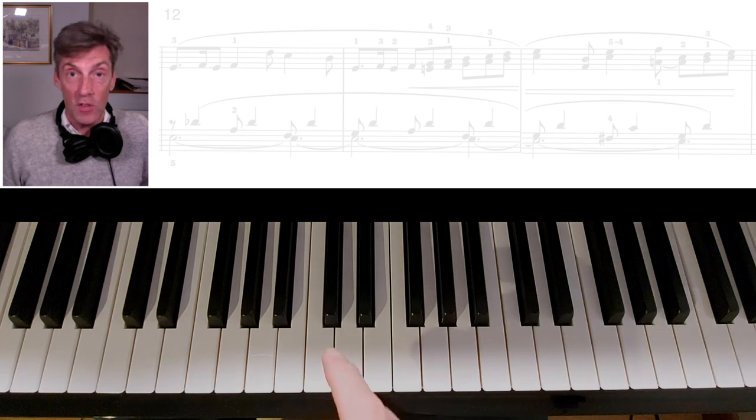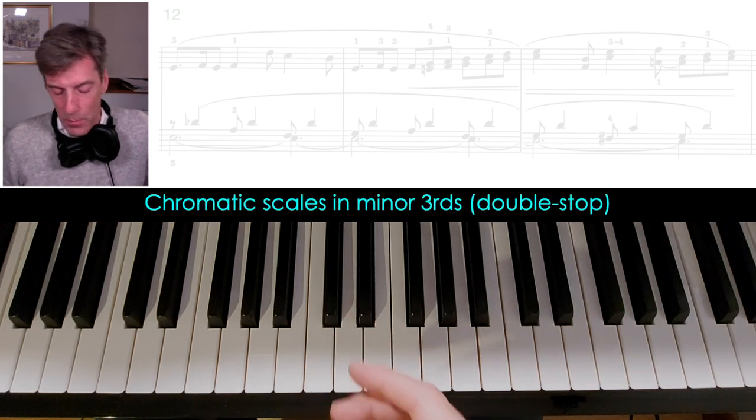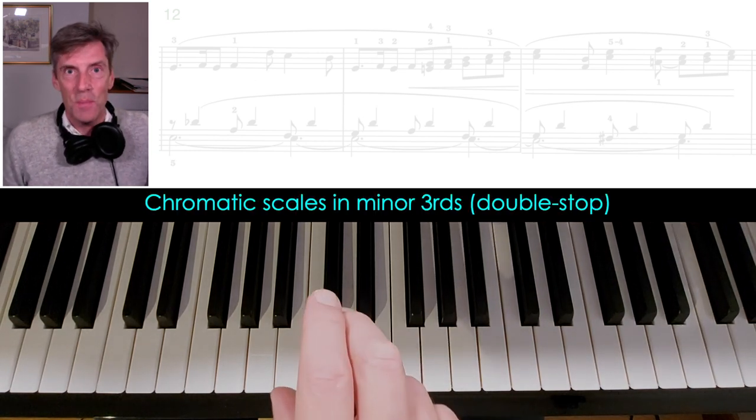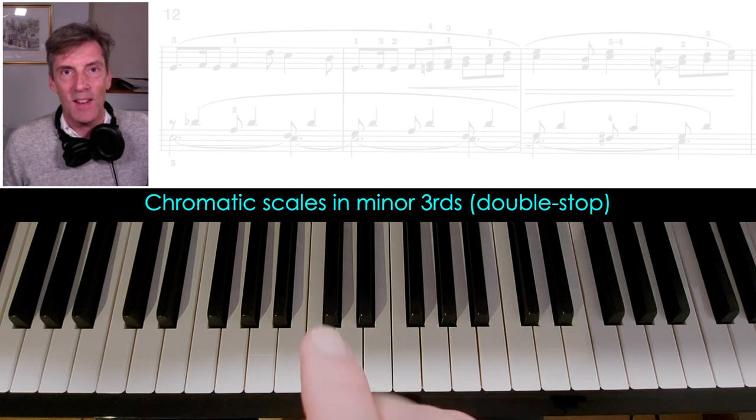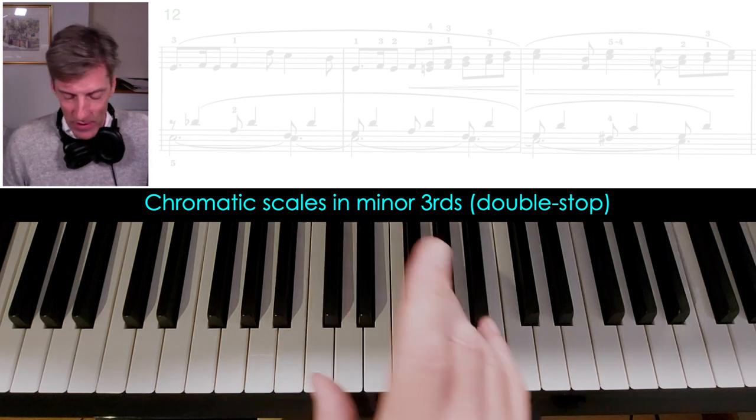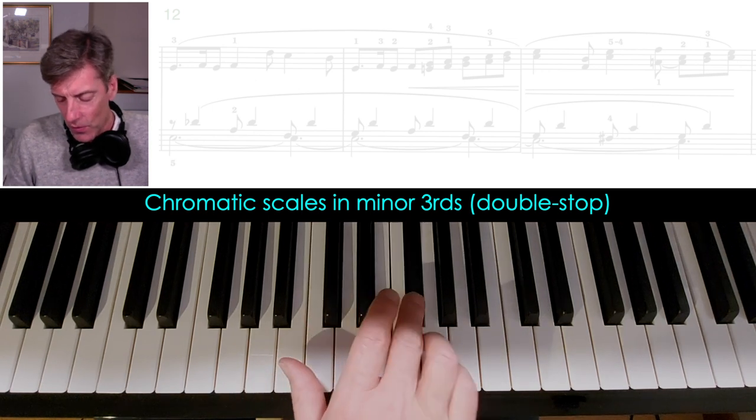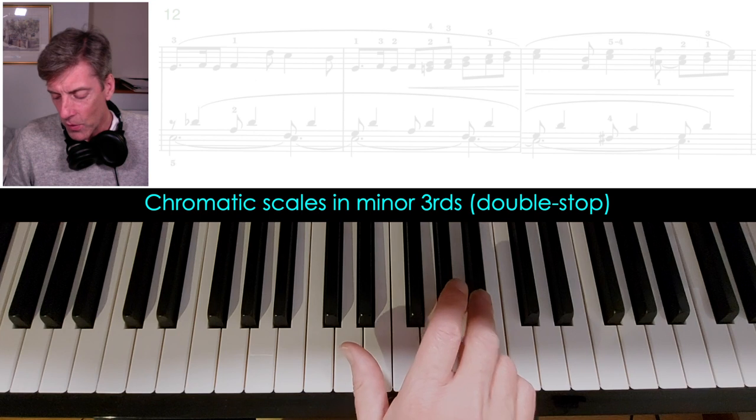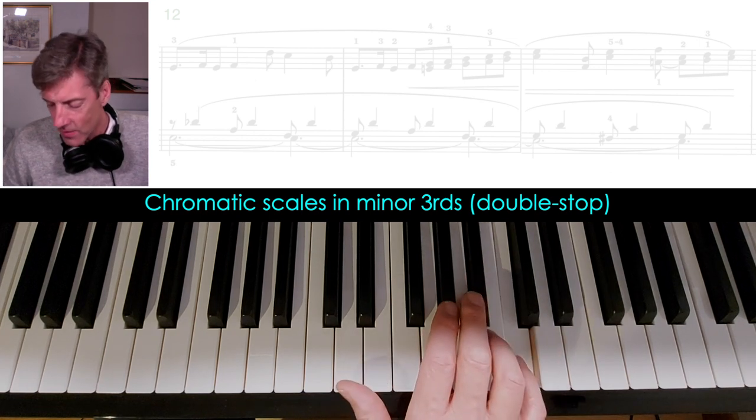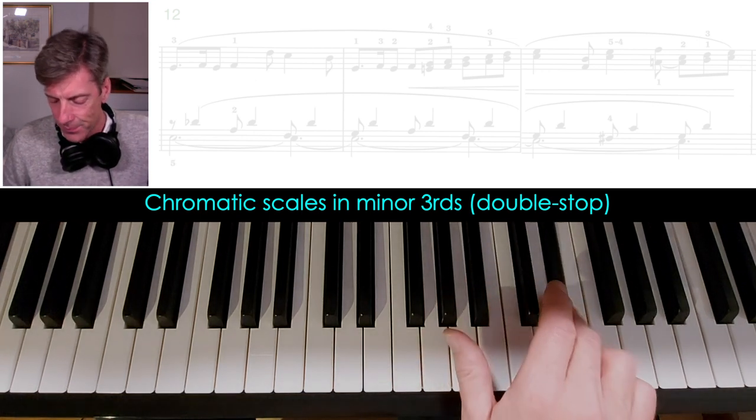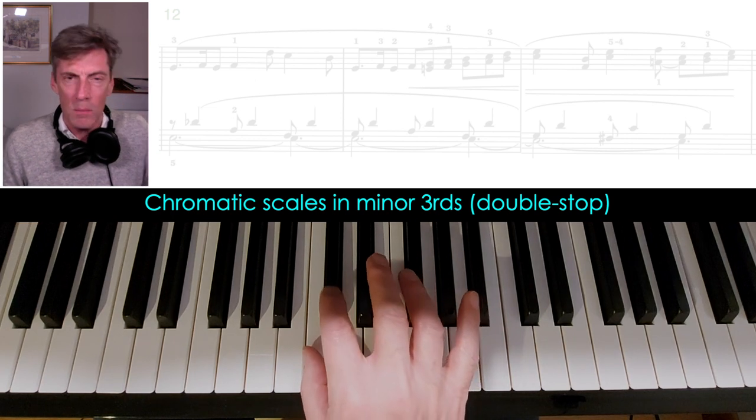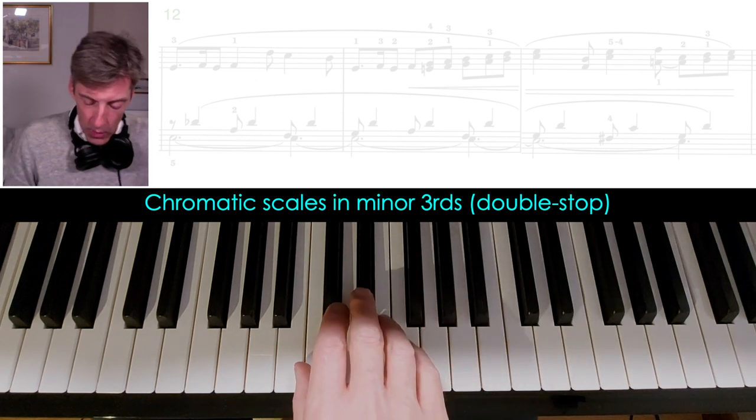Exercise number two. This is a grade eight thing. But hey. And it's parallel chromatic minor third scales. So, now the top note will be third and fourth, lots of thirds and fourths, with your fifth in the obvious place. And the lower note, mainly one and two. I'll show you what that looks like.